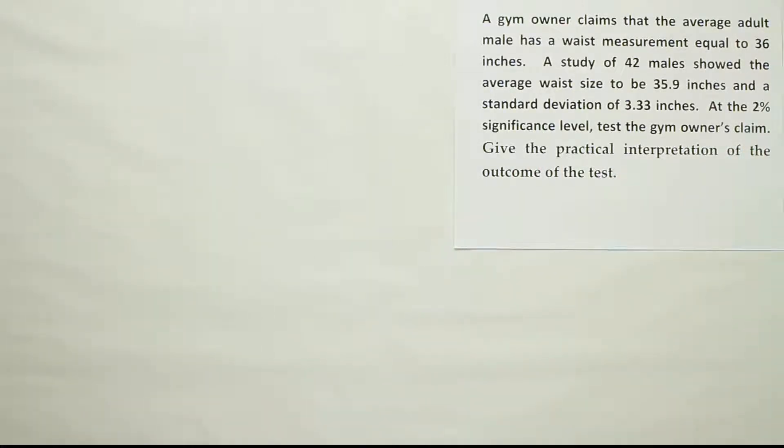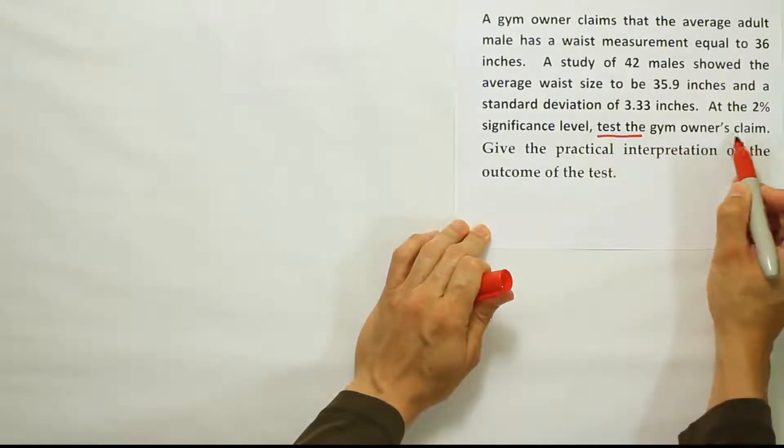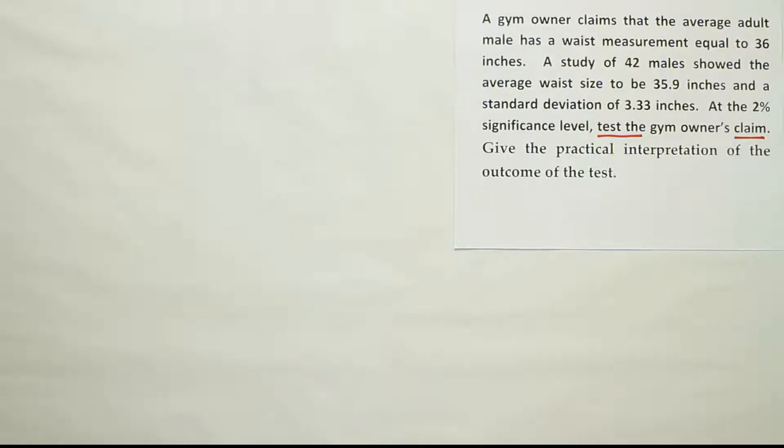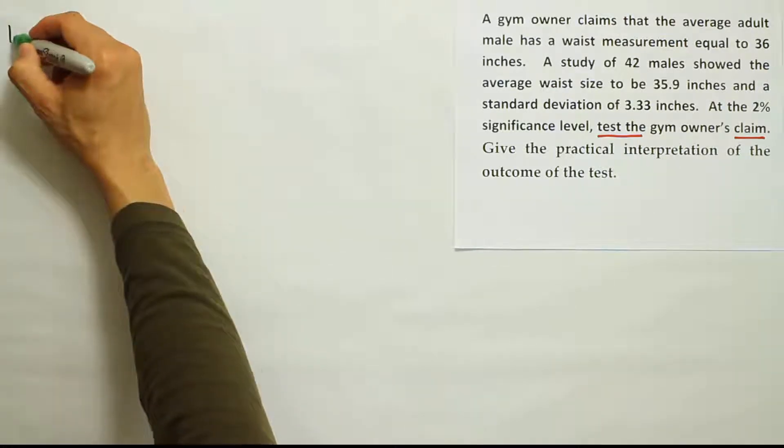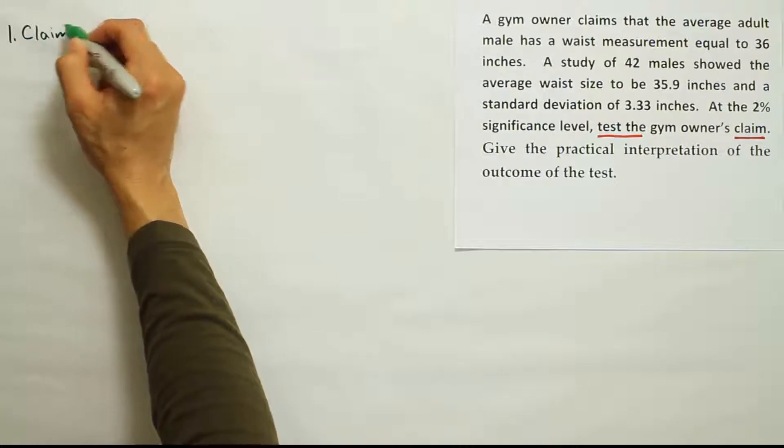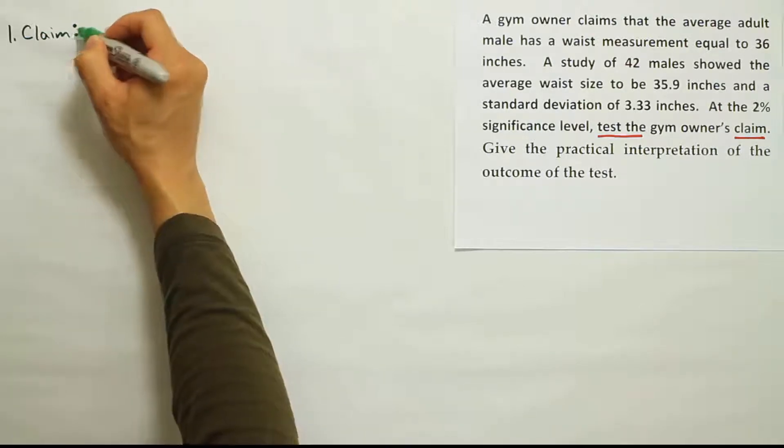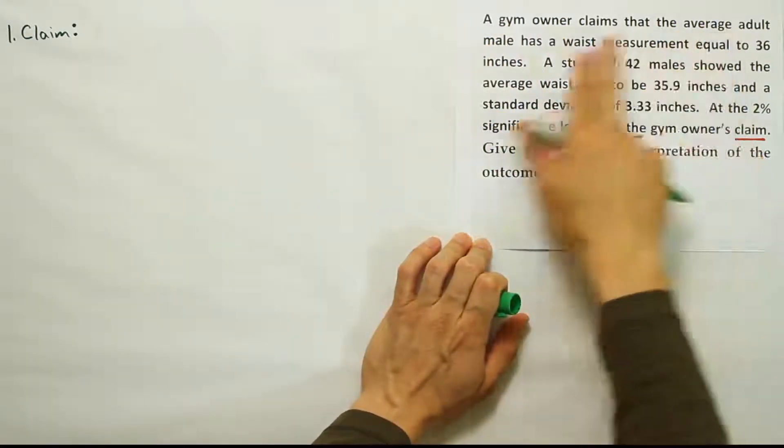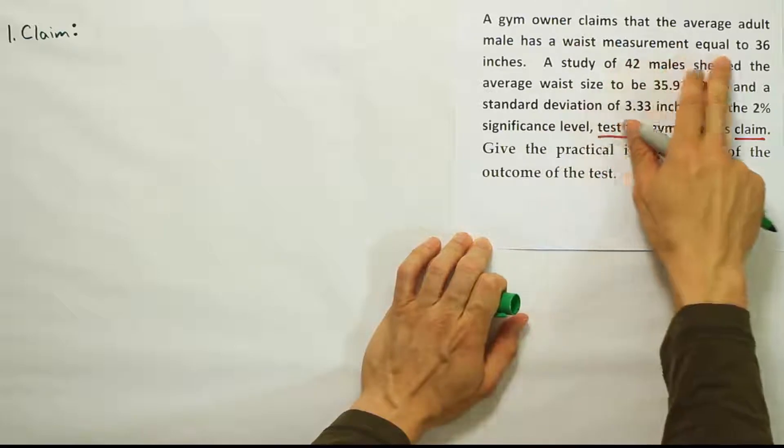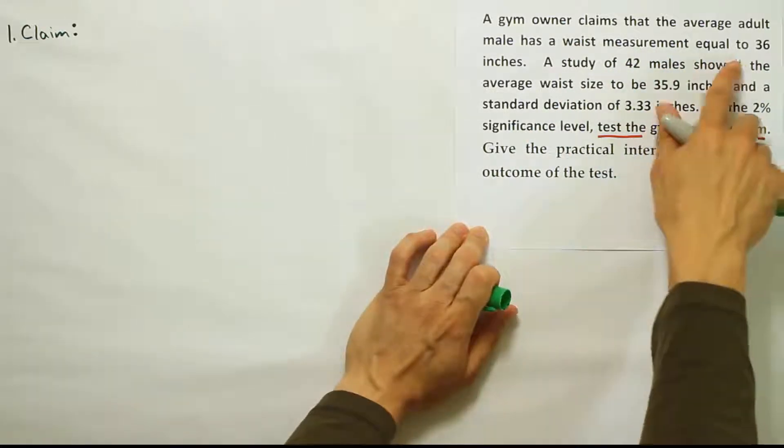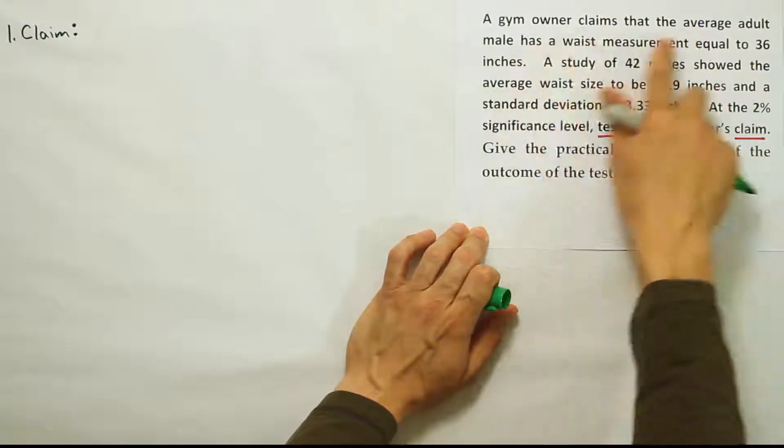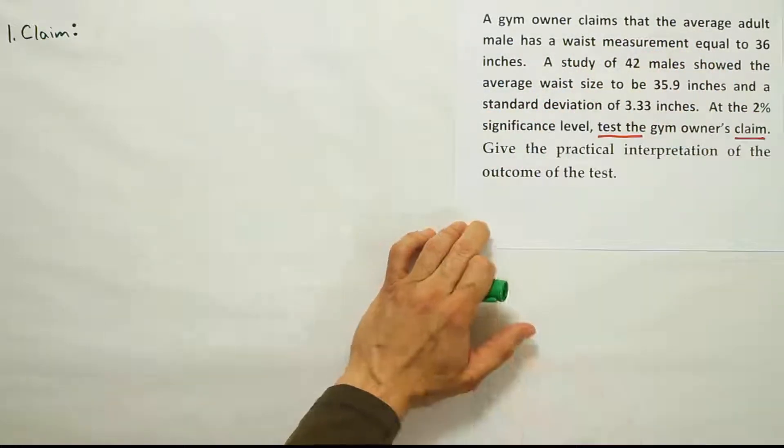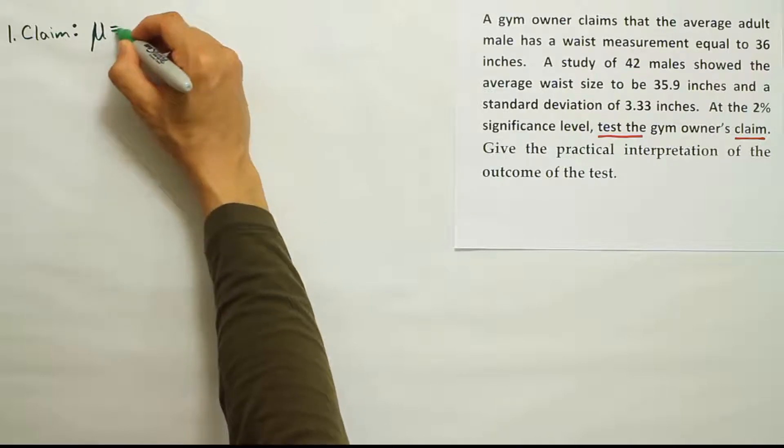Okay, so we have this phrase here, test the gym owner's claim. Test the claim. That tells us it's a hypothesis test, and at that point we need to express the claim symbolically. Okay, so let's start out with that. Our first step, step one, is to express the claim. Okay, so the gym owner claims what exactly? It says the gym owner claims that the average adult male has a waist measurement equal to 36 inches. So, if that's saying that the average adult male, that means the average waist measurement is equal to 36. So, we're going to say the mean is equal 36.